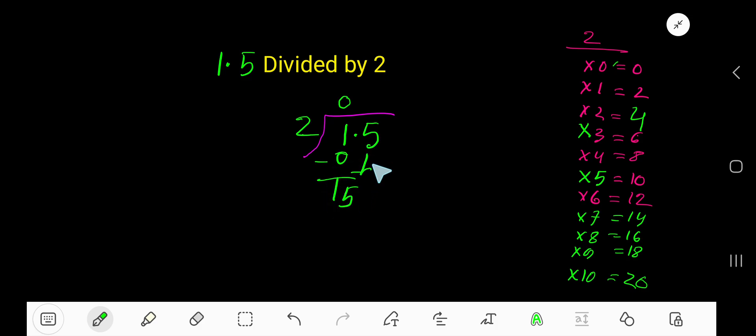Bring down this 5. But before 5, there's a decimal, and the decimal must come to the quotient directly. 2 goes into 15 how many times? 8 times is 16, which is greater, so 7 times. 7 times 2 is 14, subtract to get 1.